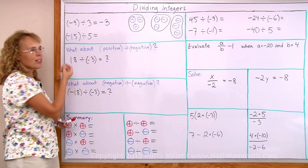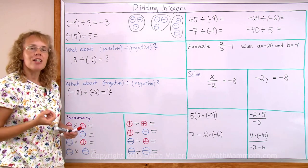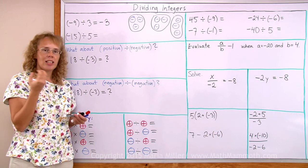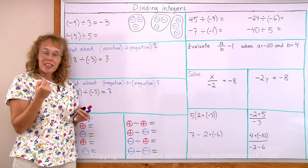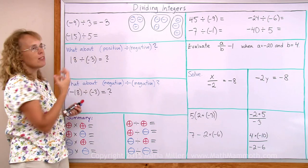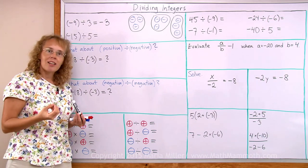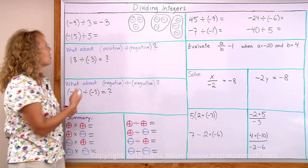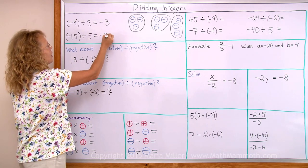Similarly, negative 15 divided by 5. You can imagine negative 15 as 15 negative counters divided into 5 different groups. How many are in each group? The answer is negative 3.